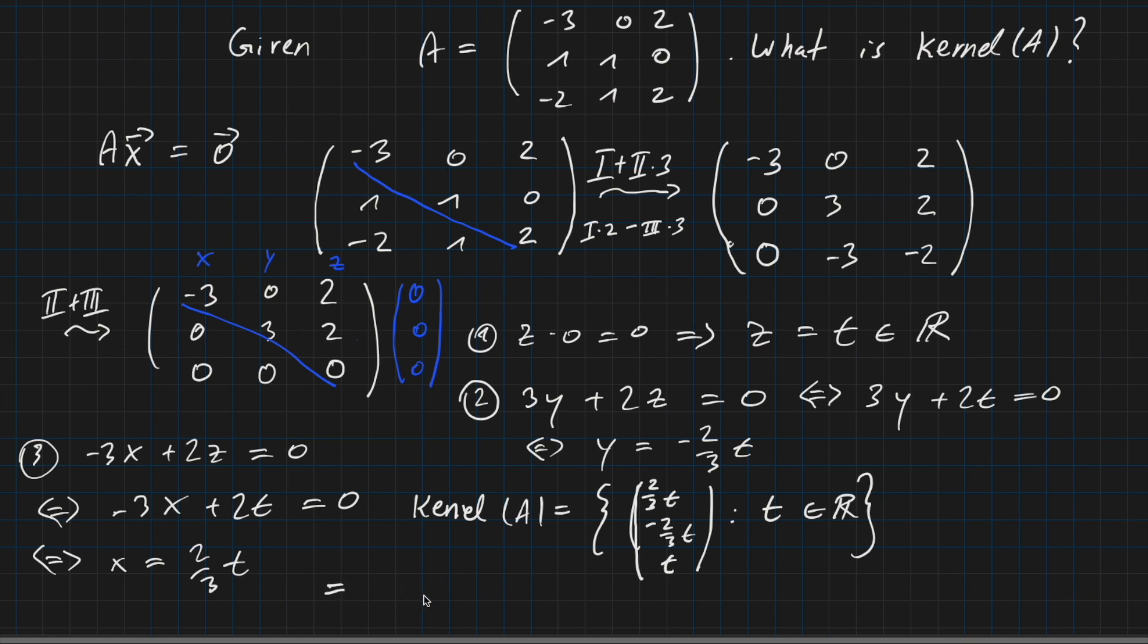So the first thing we can do is we can take t out and write it here as a factor. So then we have two, minus two, three. So we just extend it with three here, and then we factored out t, times t where t is a real number. And this can just be written because now we have a vector here and we multiply this vector by any real number. So we are doing this for every real number, and the whole set we are getting is our kernel. So we can also write this down as a span of two, minus two, and three. Just in a very simple and elegant form. This reflects our kernel.